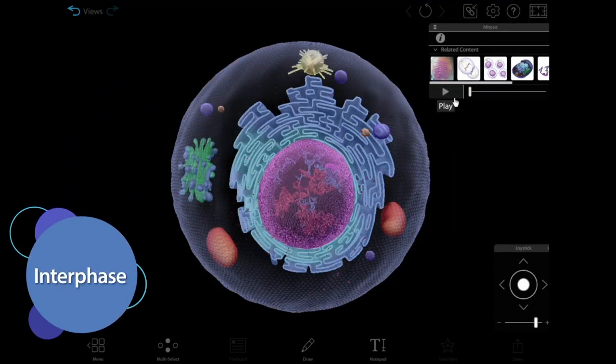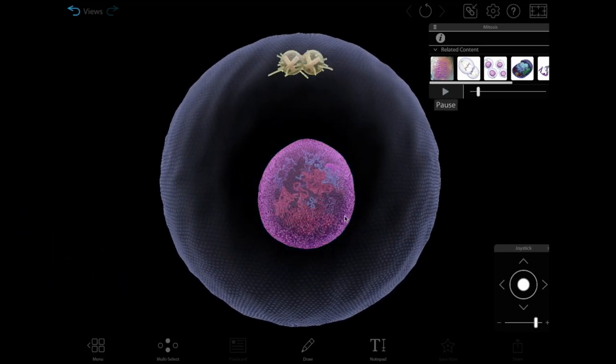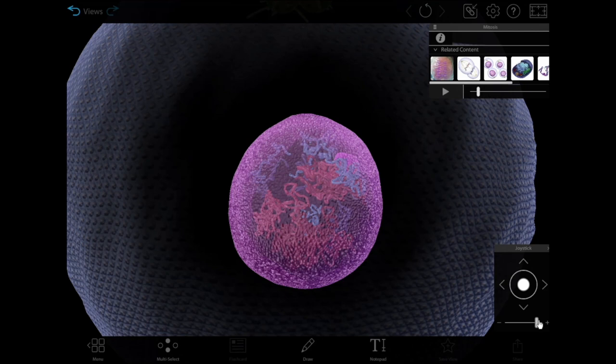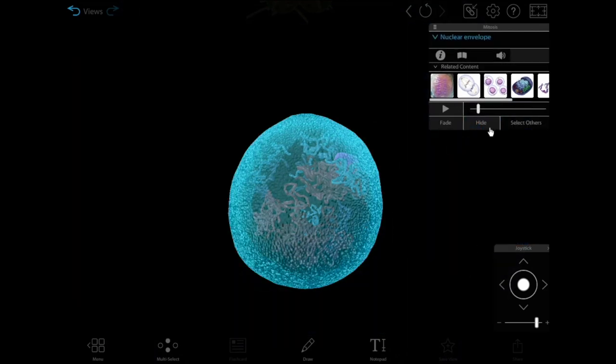Before mitosis, the genetic material, DNA, in the cell's nucleus duplicates. In a normal diploid cell, half the genetic material comes from an organism's mother, and the other half comes from its father.